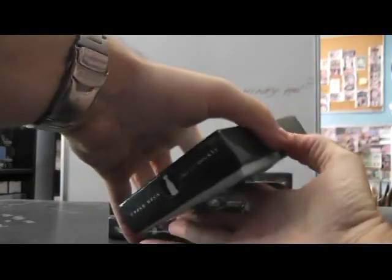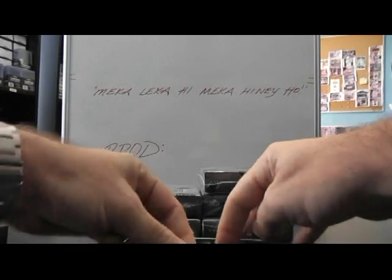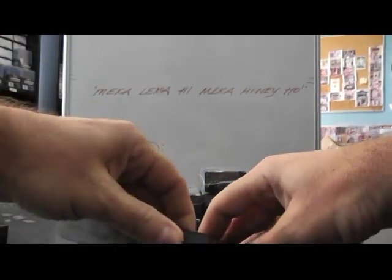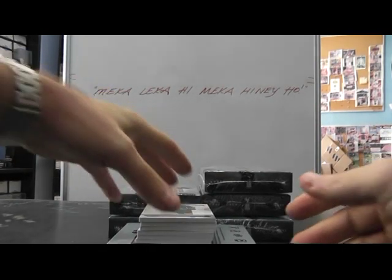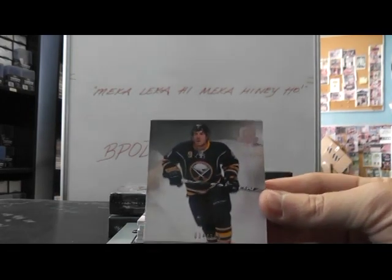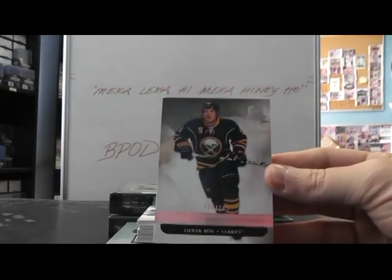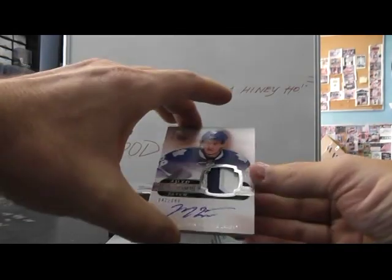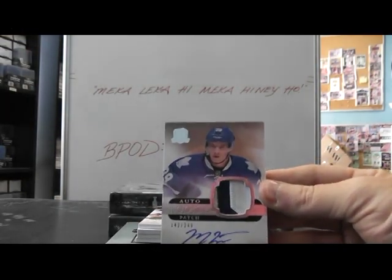Pack one. On top: Derek Waugh — Roy — Sabres. We're off. We have Sabres base card Derek Waugh. And Matt Fratton — patch rookie autograph — Leafs.